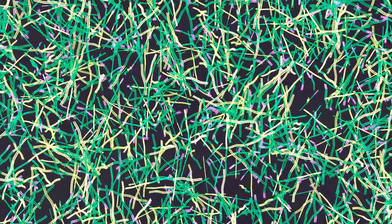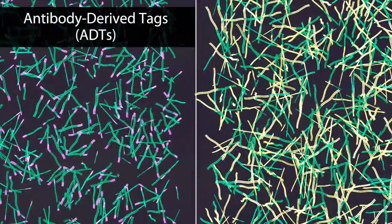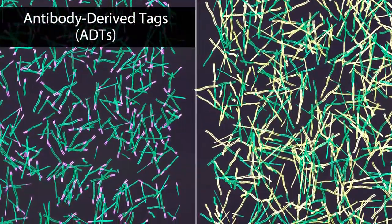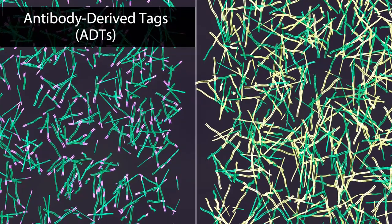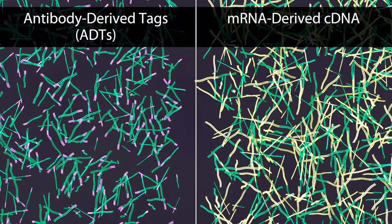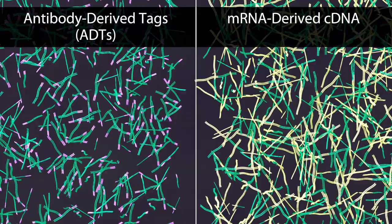After amplification, the total cDNA mix is separated into the antibody-derived tags, or ADTs, generated from the TotalSeq conjugates, and the mRNA-derived cDNA so that the sequencing libraries can be prepared independently.